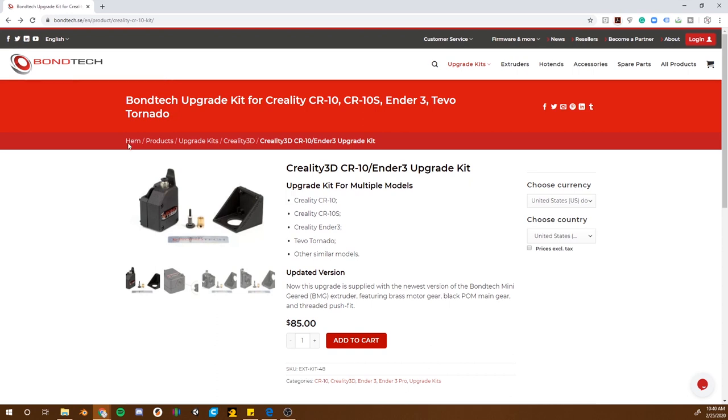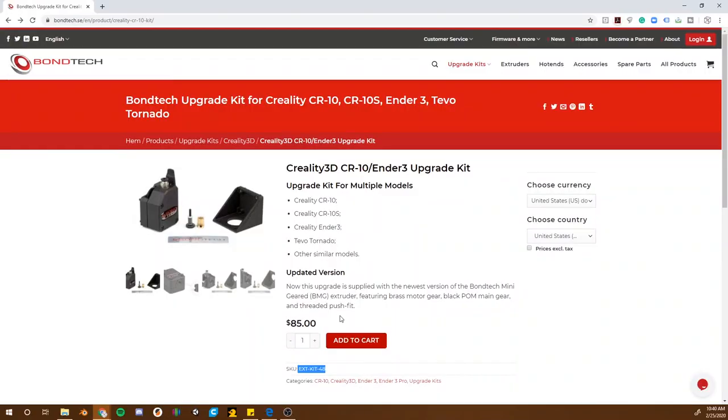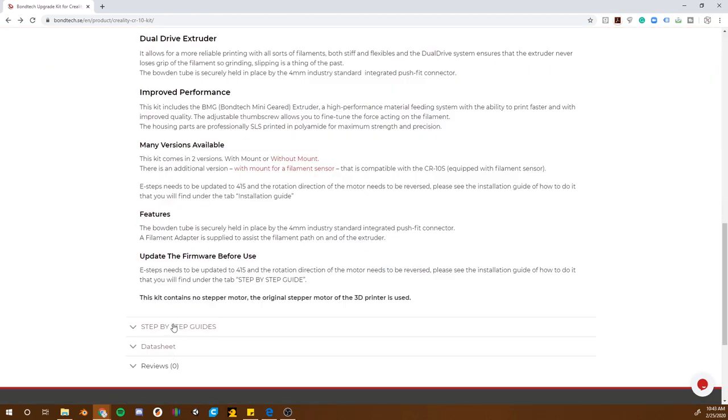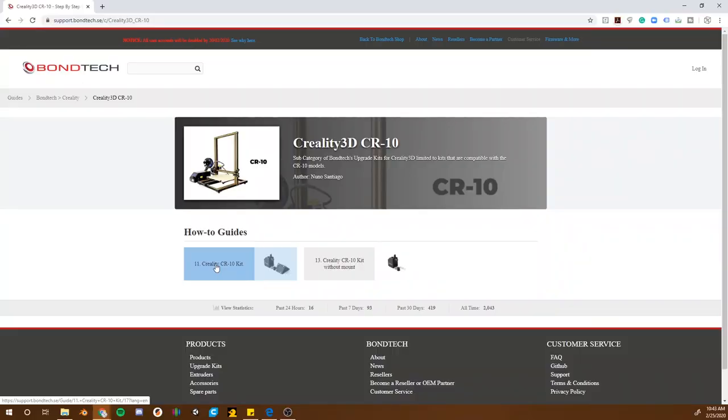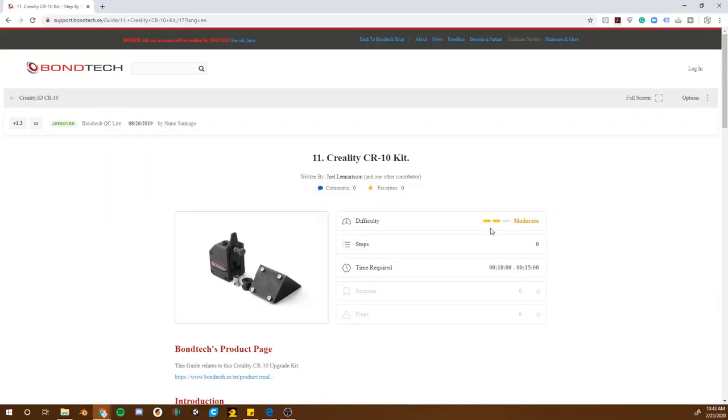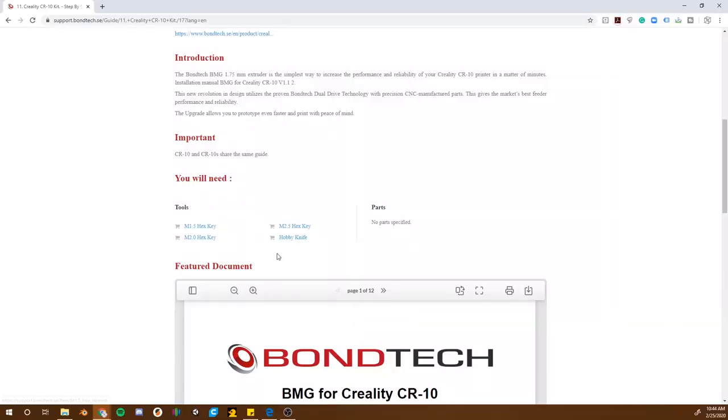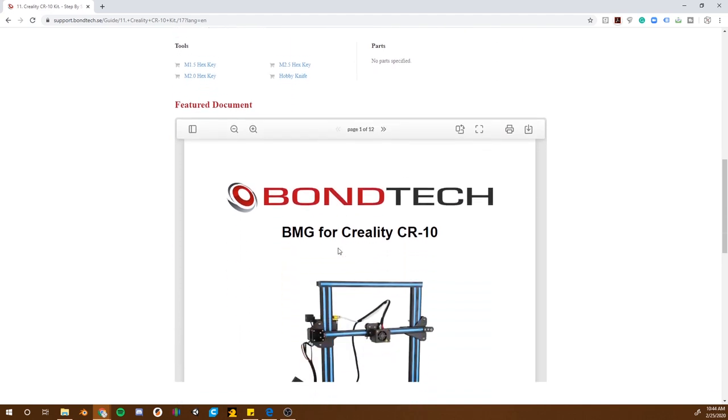So let's go ahead and take a look at their website. This is the EXTKit 48 that I have in my hand, and it is roughly $85 US. It's for the CR-10, CR-10S, the Creality Ender 3, TiVo Tornado, and other similar models. So we're going to go to the step-by-step guide and really just take this step-by-step and see how it goes with mount. Difficulty, moderate, time required, 10 to 15 minutes. That's exactly what I have. Let's see if it really works. Hex keys and a hobby knife. I got all that. Let's go.